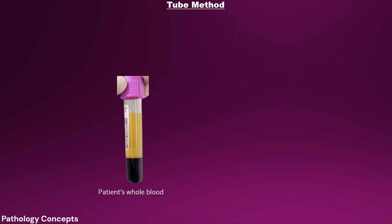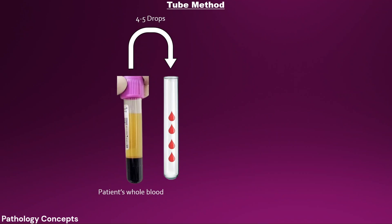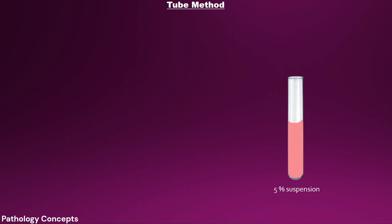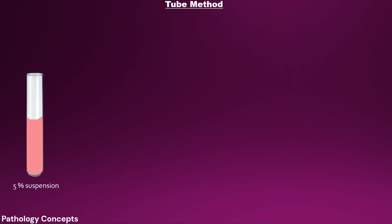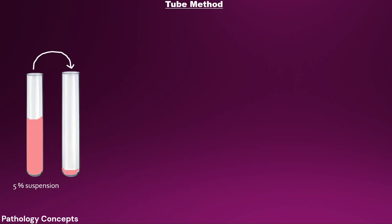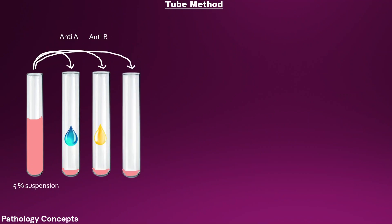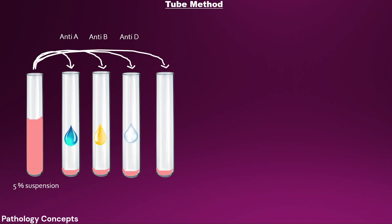For the tube method, take the patient's EDTA whole blood. Add four to five drops to a test tube, add normal saline and wash three times, then prepare a 5% cell suspension. From this suspension, add one drop of cells each into four test tubes. Add anti-A serum to tube one, anti-B serum to tube two, anti-D serum to tube three, and keep tube four as an autocontrol. This part is called forward grouping.